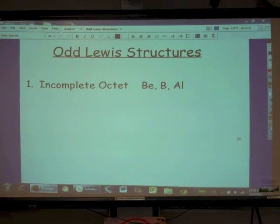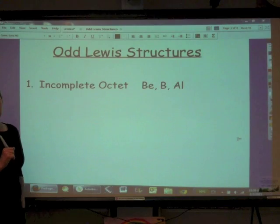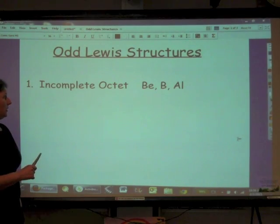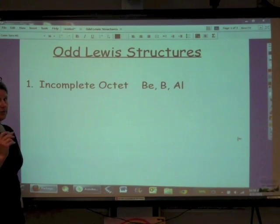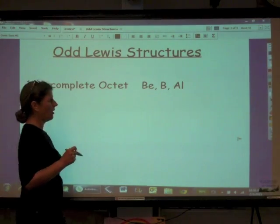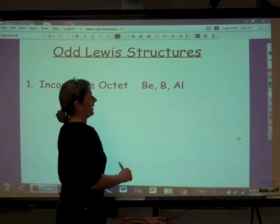Our title today is Odd Lewis Structures. So today what we're going to do is we are going to look at some compounds that don't obey the octet rule. And so the first one we want to look at is an incomplete octet and the three elements that you're going to always keep in mind that are okay to not have a full octet in terms of their Lewis structures are compounds that contain beryllium, boron, and aluminum.